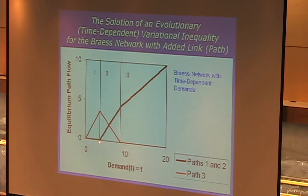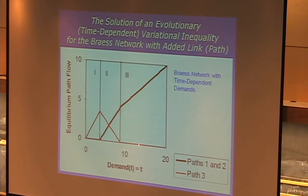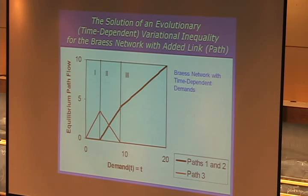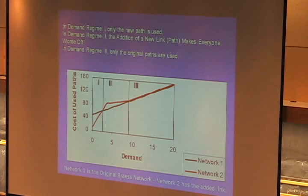At this level of demand, all the paths will be used but everyone is worse off. What if the demand keeps on increasing - higher than 10? More people are moving into the community and so forth. What actually happens, and this absolutely amazes me, is the new path is never being used. You build a new road and you have Braess Paradox never occurring - only the original paths are used. So it makes no sense to build it. This was shown in 1997 to exactly satisfy the version of Braess's result. You have to think before you build, before you design - investigate the behavior.